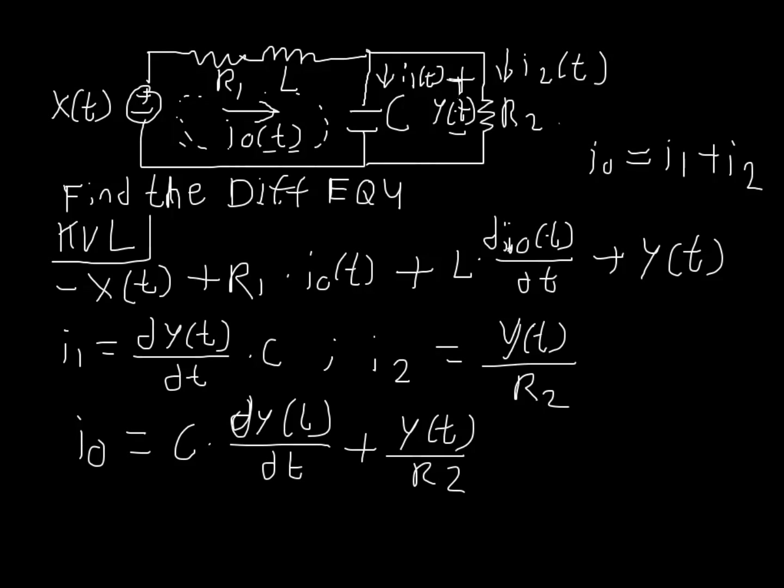So now we can substitute this equation here. Well, we can't quite yet because we have i0, but we only have one term with i0. But we also have a derivative of this i sub 0. So we take the derivative, so di0 of t dt is just simply, we just take the derivative of both sides.